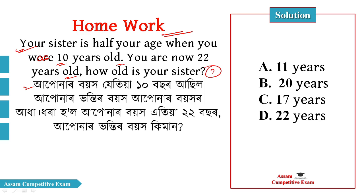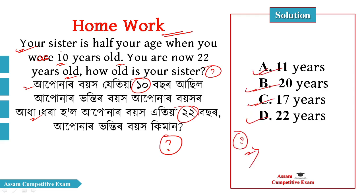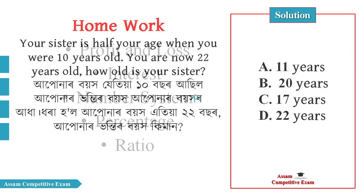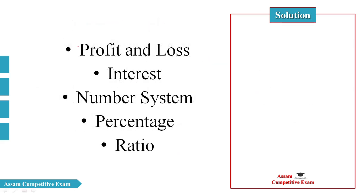The options are: if you are 12 years old, then your sister is 12 years old. If you are 22 years old, then she is 12 years old. The options are 11 years old, 20 years old, and 22 years old.